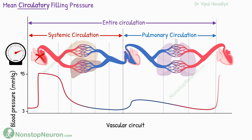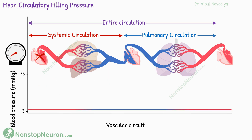But if the heart stops pumping, the pressure generation stops. So the gradient is lost and flow stops. In such a situation, pressure in arteries, capillaries, and veins all become uniform. This pressure is called mean circulatory filling pressure. Normally, it's about 7 mmHg.